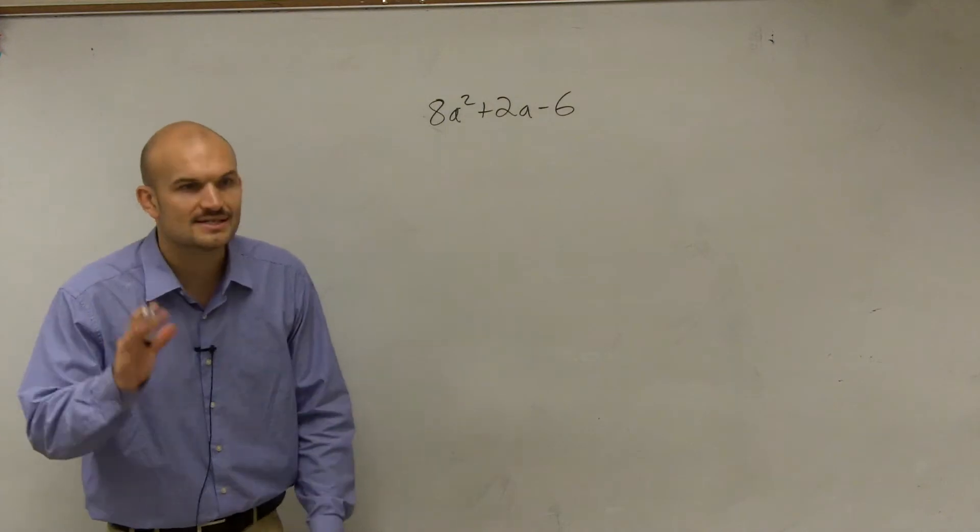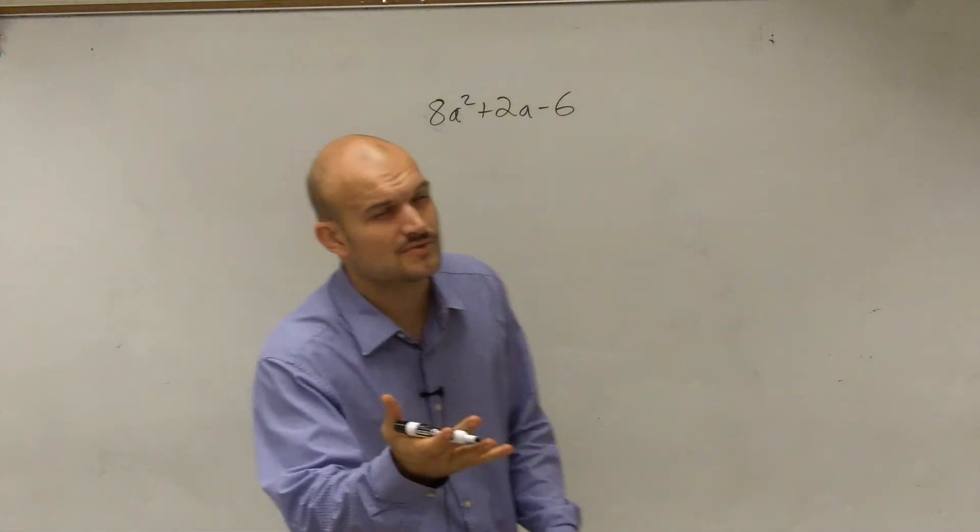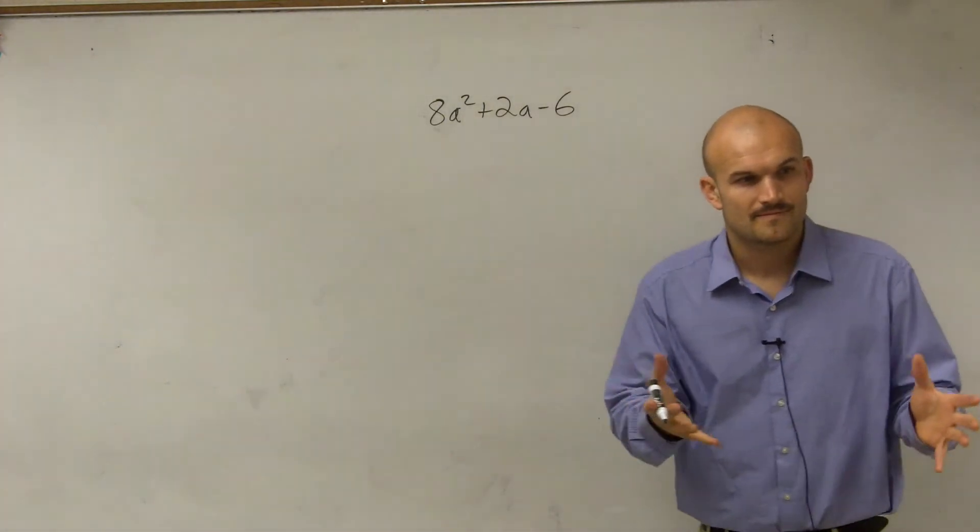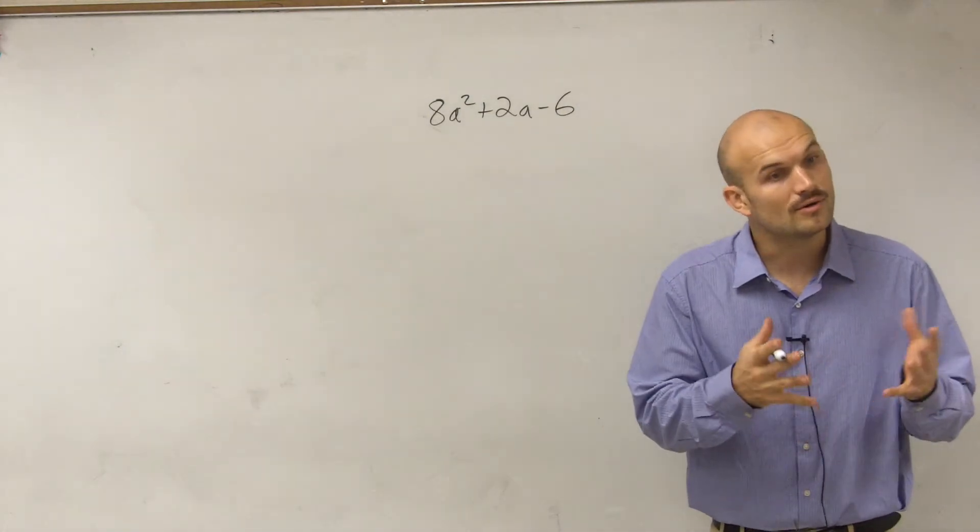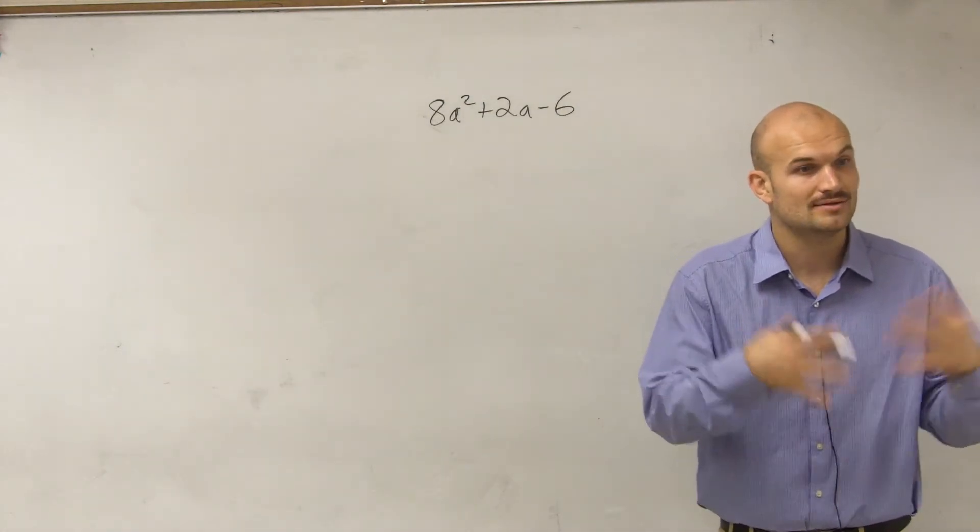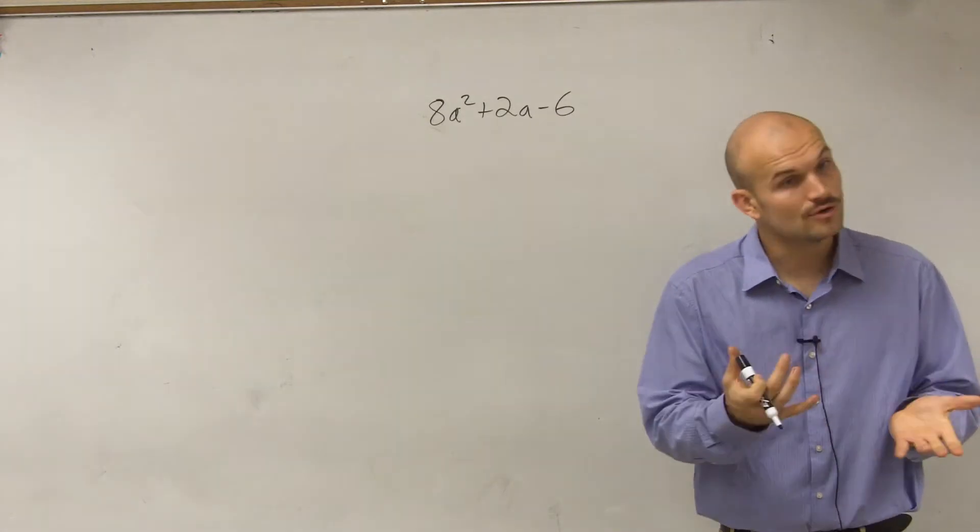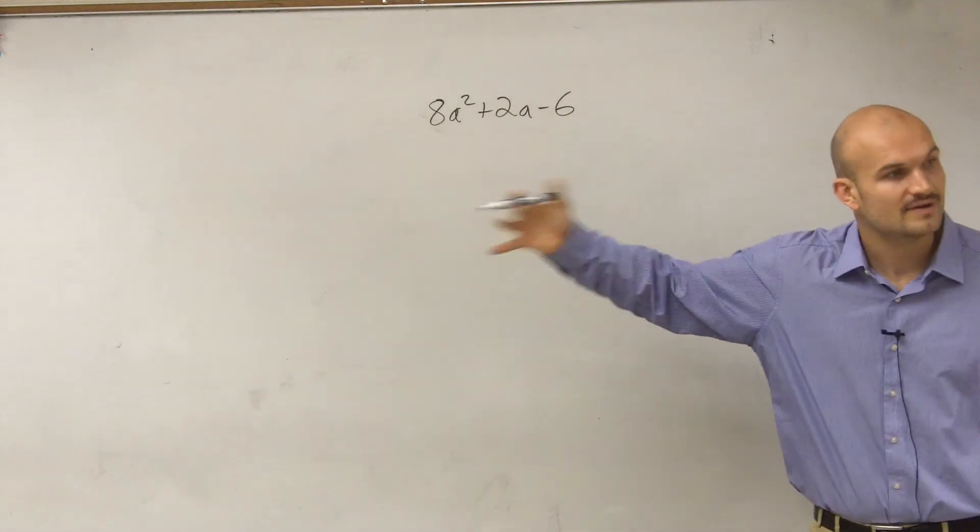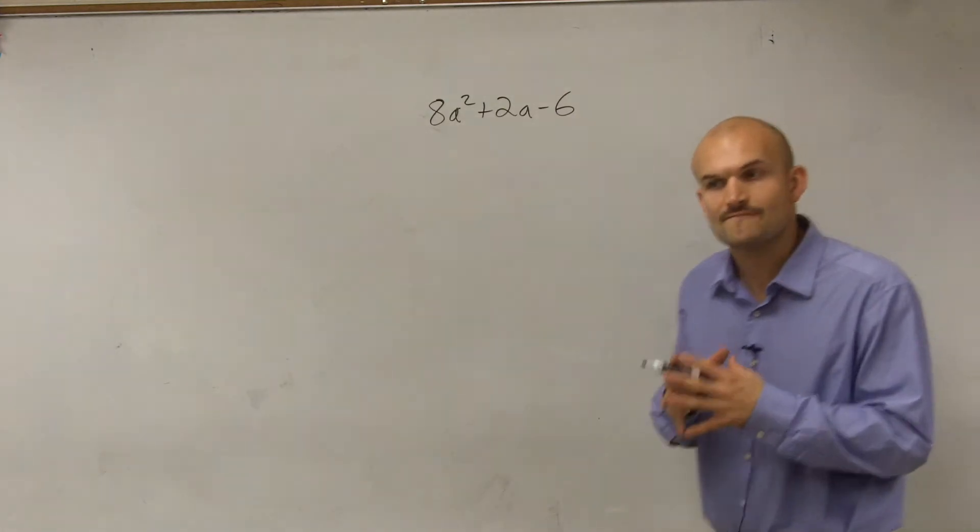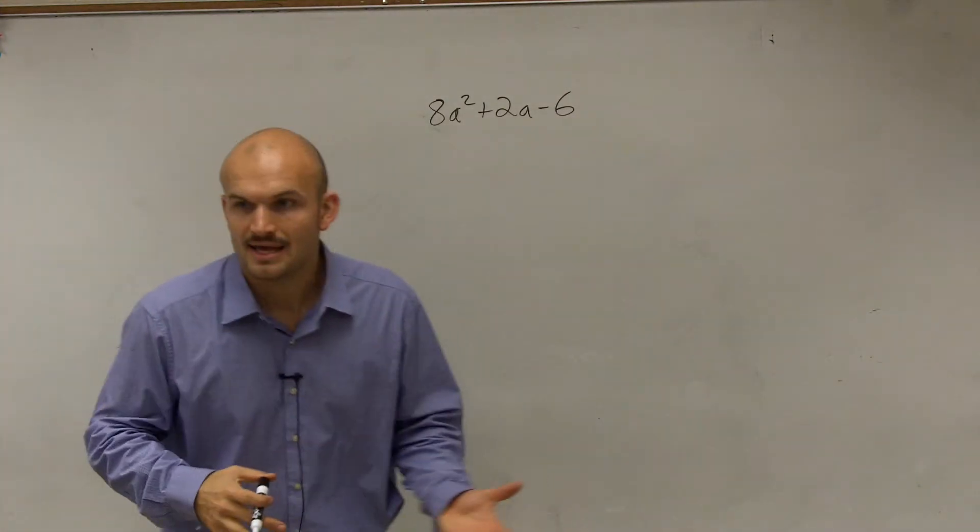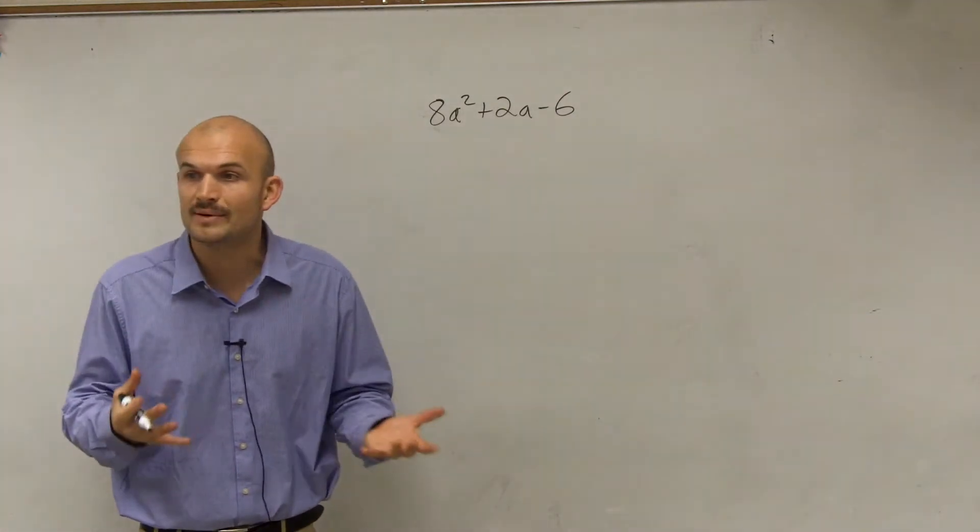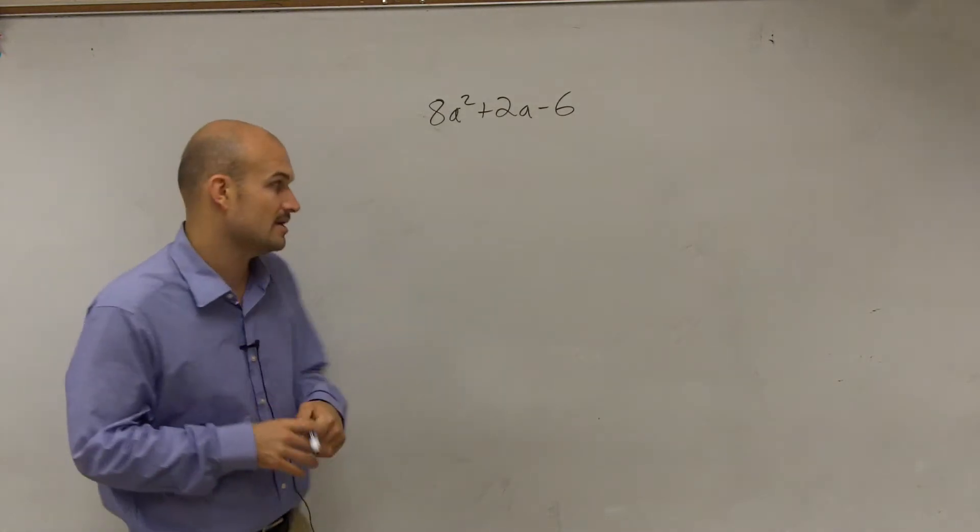So the first thing, remember the easiest thing I always want to do—Kevin, do you remember the first thing we always want to do with factoring? Take it down. Right, so we can do that by factoring out the 2, which would be the GCF. It's what they all share. You always want to factor out the common terms. Any number or terms that are common, that's what you're going to want to factor out.